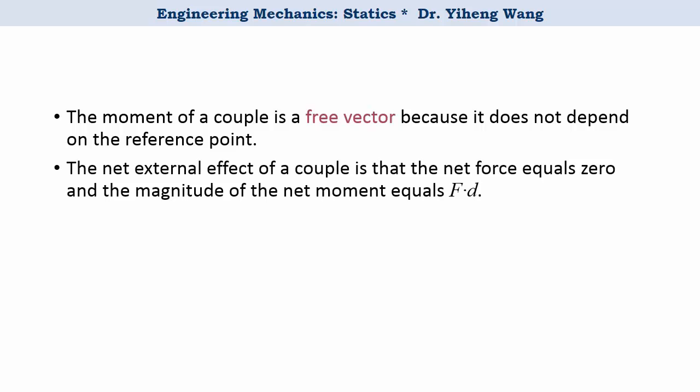The net external effect of a couple is that there is no net force but only a net moment. The magnitude is calculated as F times d, where d is the perpendicular distance between the couple. The moment of a couple is also a vector, just like other moment or force vectors, so calculations still follow the rules of vector calculation.